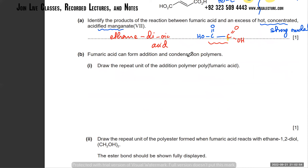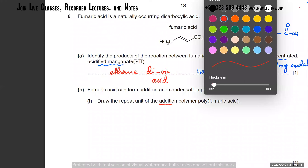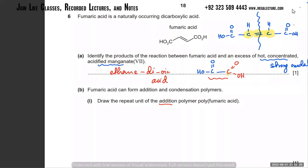Fumaric acid can form addition and condensation polymers. Draw the repeat unit of the addition polymer. Coming back to fumaric acid - how do you form an addition polymer? Remember, addition polymers are formed around double bonds. The first thing you have to do when you've got an addition polymer is make sure there's nothing on the right or left side of the double bond.